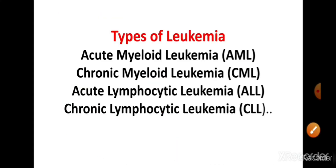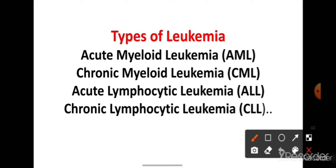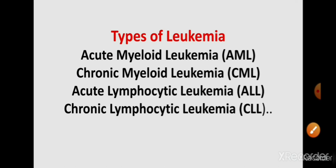Leukemia के कई types हैं। कुछ types यहाँ दिए हैं: पहला है Acute Myeloid Leukemia जिसे AML भी कहा जाता है, दूसरा है Chronic Myeloid Leukemia यानी CML, तीसरा है Acute Lymphocytic Leukemia, और last है Chronic Lymphocytic Leukemia। अगर इस पर और detail में information चाहिए तो comment box में लिखें और हम इस पर separately video बनाएंगे।